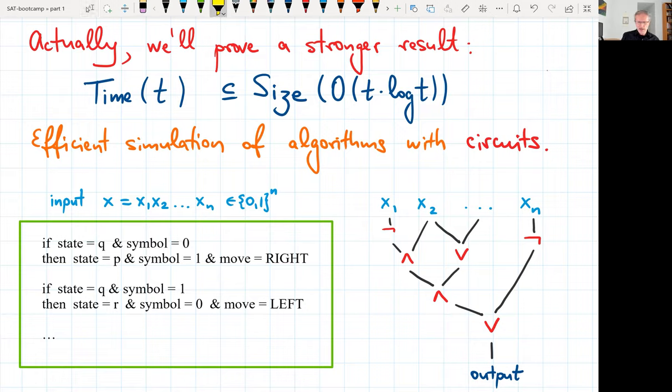So we'll prove that for deterministic time t computation we can build an equivalent circuit of size almost t. So time t is in circuit size t log t. So basically we have efficient simulation of algorithms by circuits and the two objects are represented in this picture that you see on the slide right now. On the left hand side you have a Turing machine and the input to the Turing machine, let's fix some input length n. So a particular input is some sequence of n bits x equal to x1 through xn and the Turing machine is whatever standard computation description with if statements saying if state this and symbol this then state that and symbol that and so forth and you have a move left or right each time.